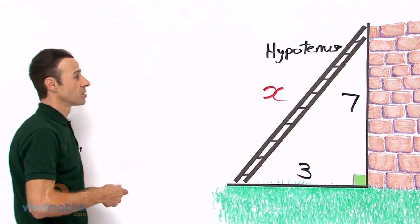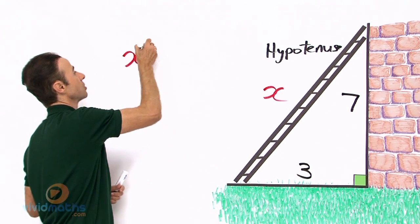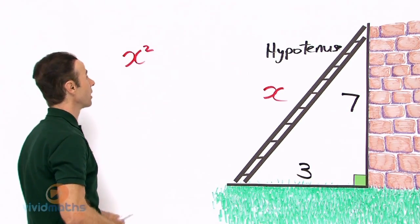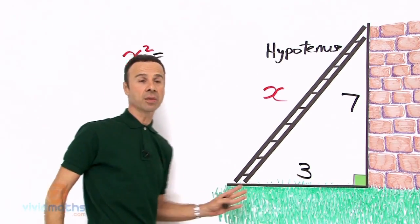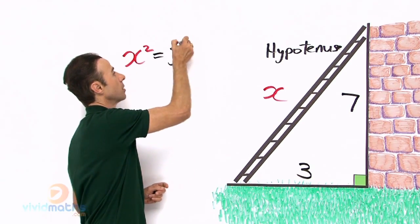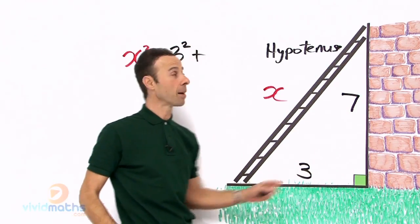So let us write down the equation. First we will write down x squared and that equals 3 squared for that length plus 7 squared for that length there up the wall.